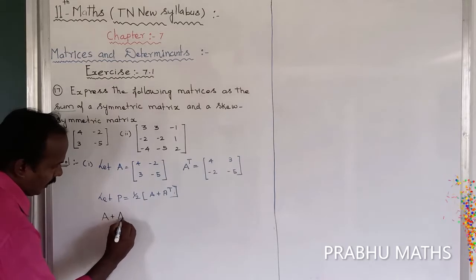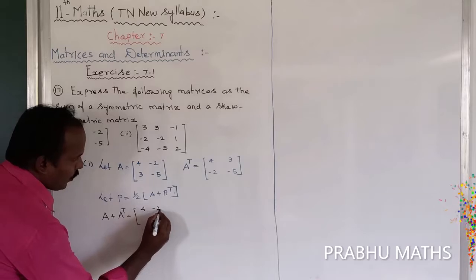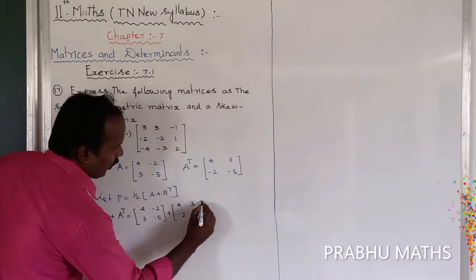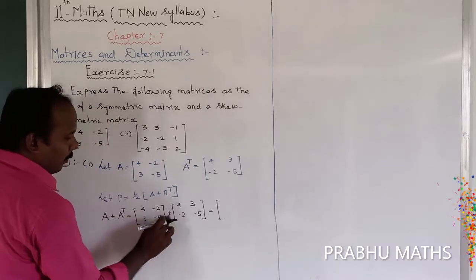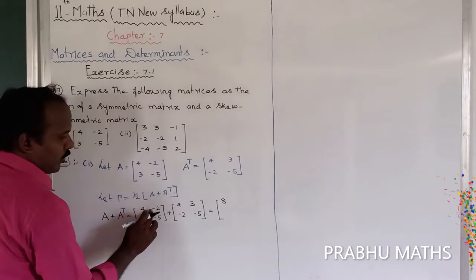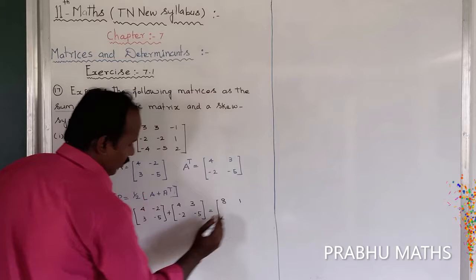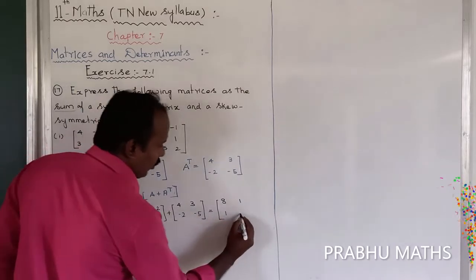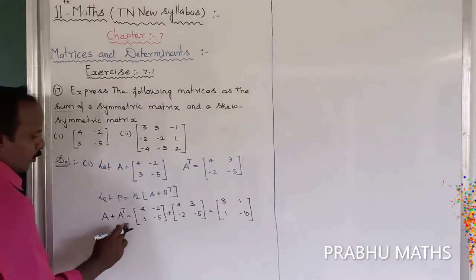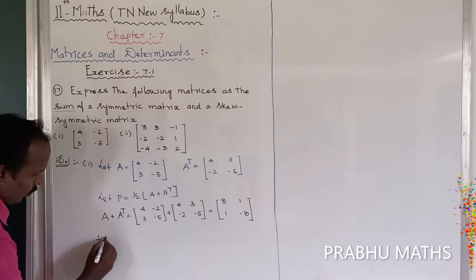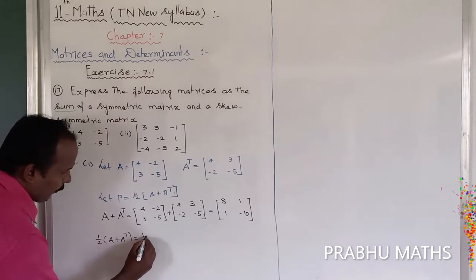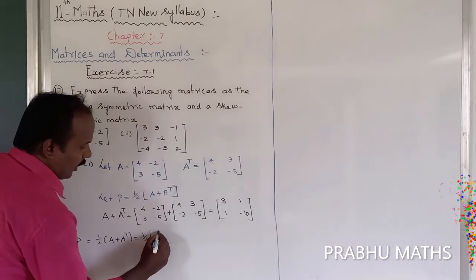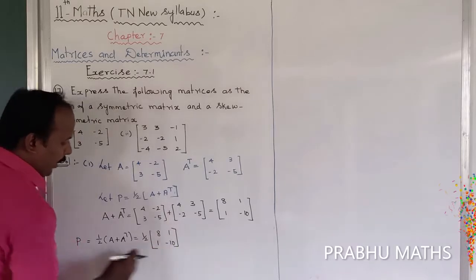First of all, find the value of A plus A transpose. That is equal to [[4, -2], [3, -5]] plus [[4, 3], [-2, -5]]. Adding corresponding elements: 4 plus 4 is 8, minus 2 plus 3 is 1, 3 plus minus 2 is 1, and minus 5 plus minus 5 is minus 10. So P is equal to 1/2 into [[8, 1], [1, -10]].